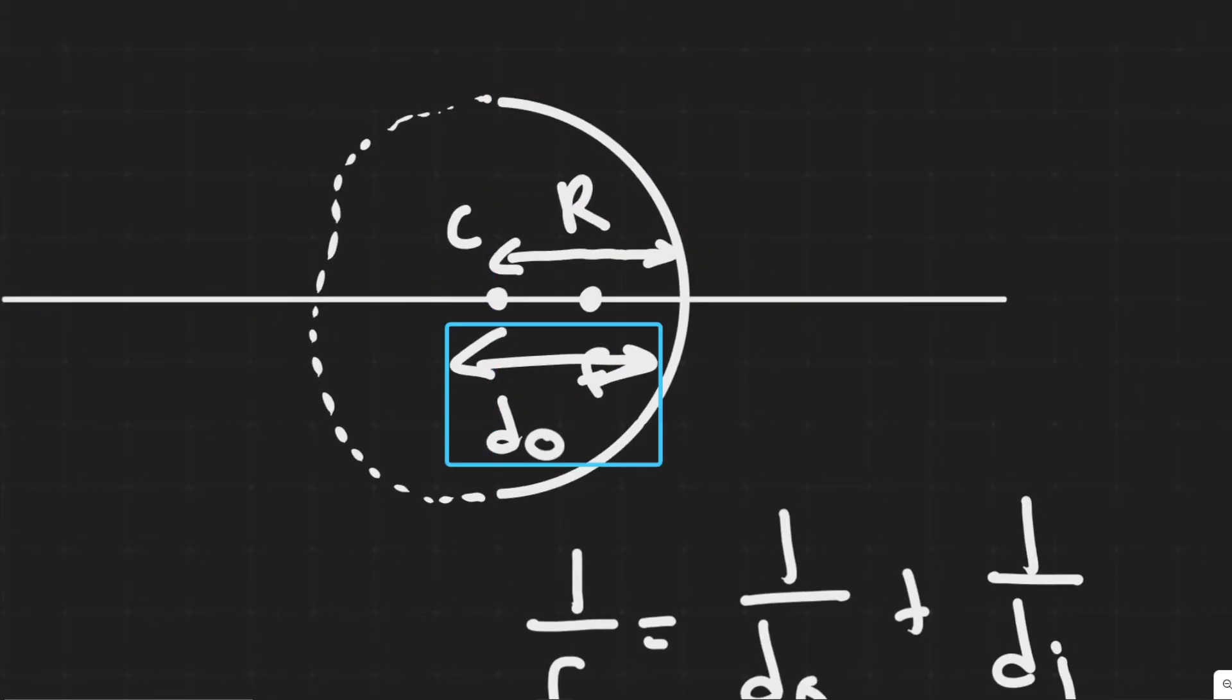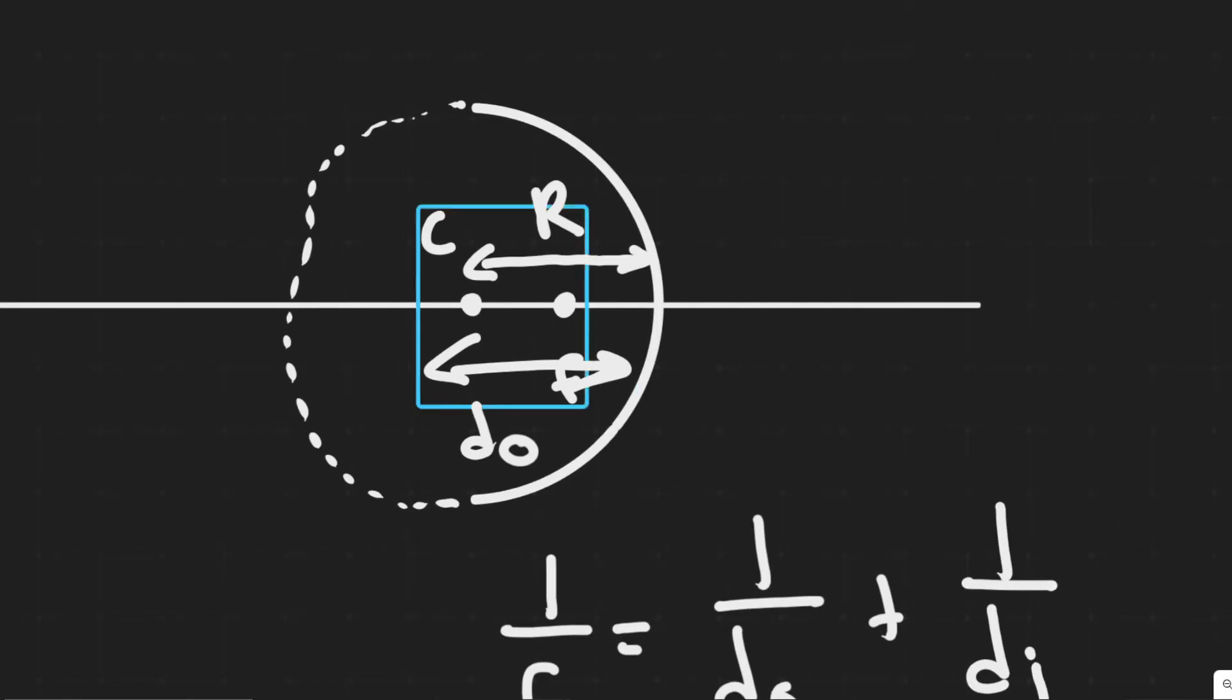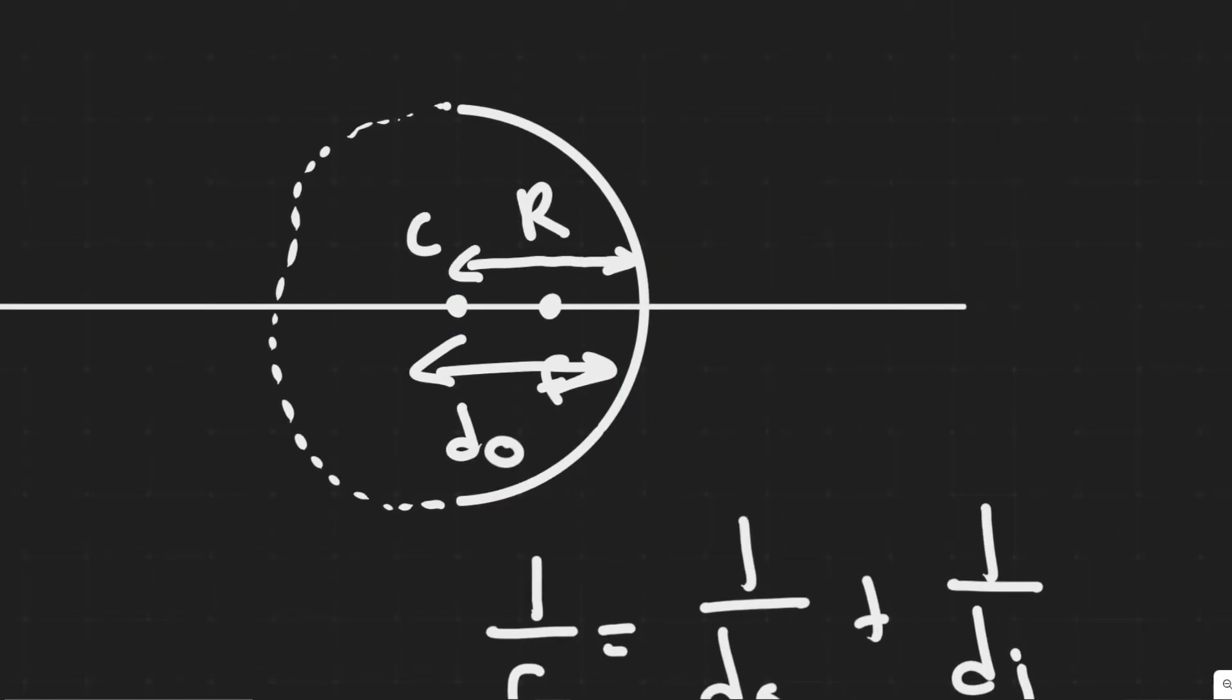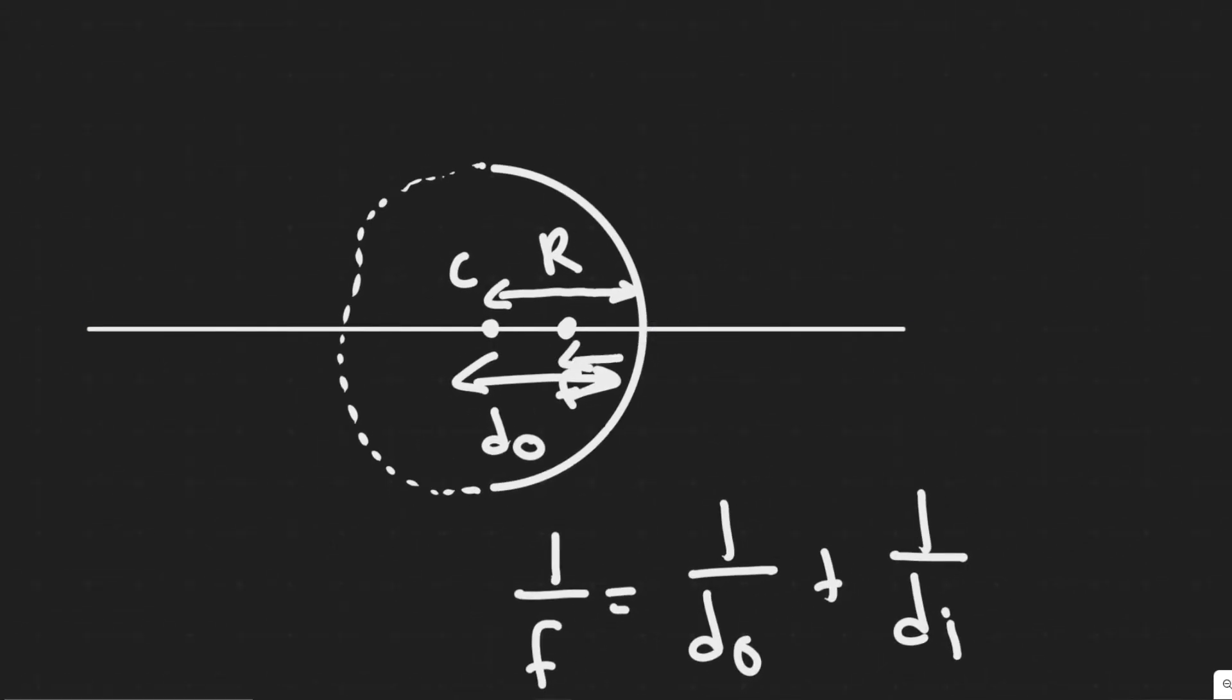We know this distance is radius R. Whenever they talk about the radius of the mirror, they're talking about the distance from the center of curvature to the mirror itself, or to the edge. This is called the radius of curvature R, and they do give us that value. Then f is called your focal length, defined as the point halfway between the center of curvature and the mirror.